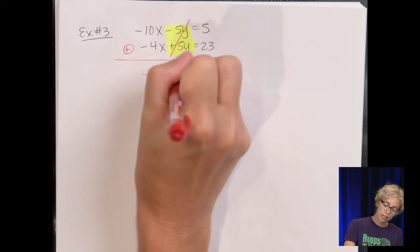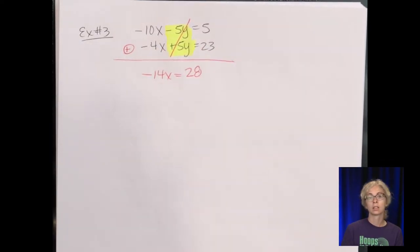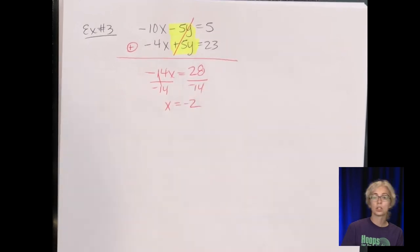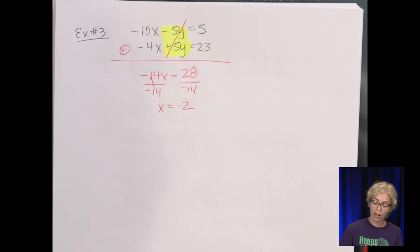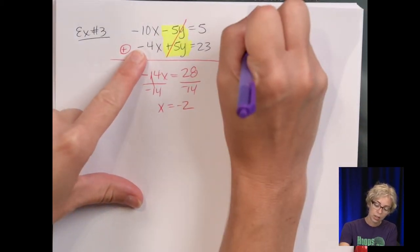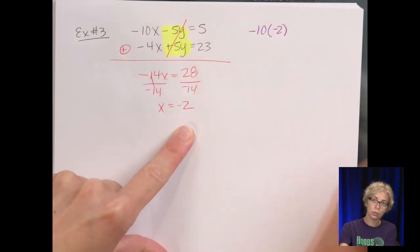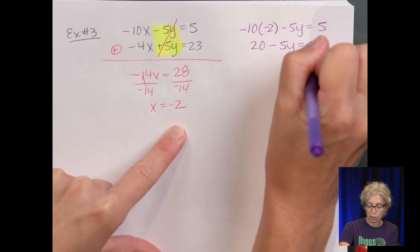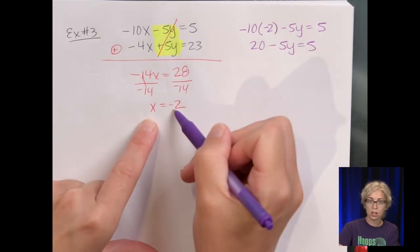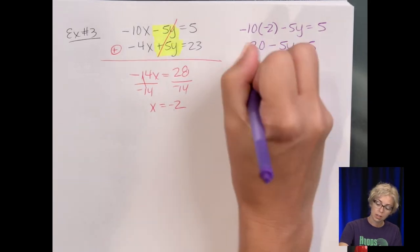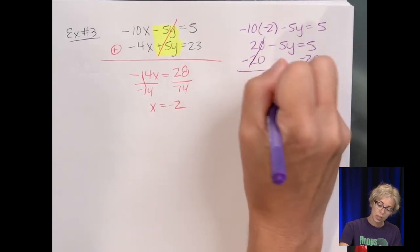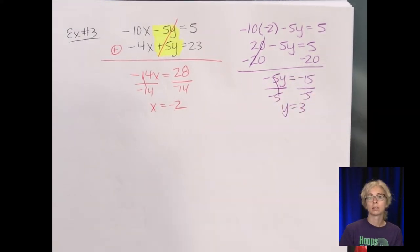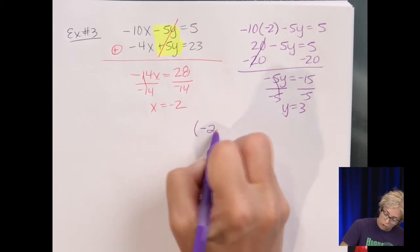Adding the two equations gives negative 14x equals 28. Divide by negative 14 and x equals negative 2. Plugging back into the first equation: negative 10 times negative 2 minus 5y equals 5, so 20 minus 5y equals 5. Then negative 5y equals negative 15, divide by negative 5, and y equals 3. Written as a point, the answer is (negative 2, 3).